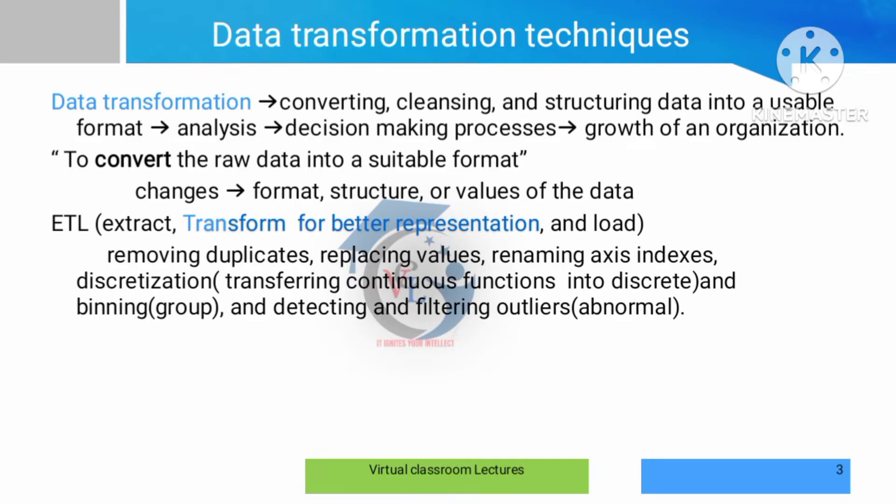The main process in data transformation is removing duplicates. Duplicates are copies of data — one piece of data has multiple copies. For example, if a student's data is entered two or three times, it is a duplicate and should be removed so that each student's data appears only once.